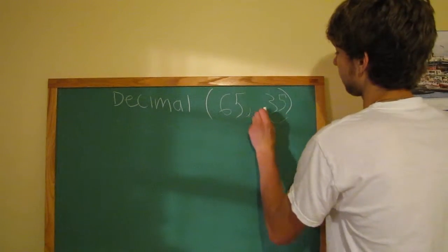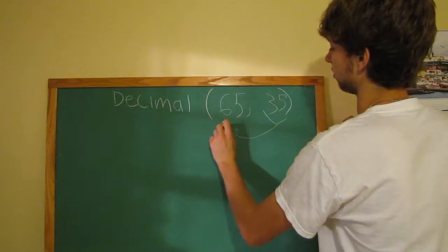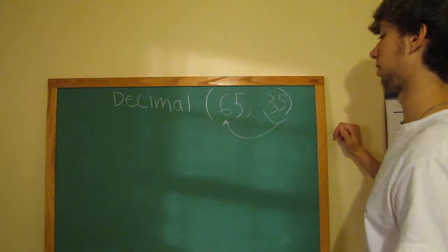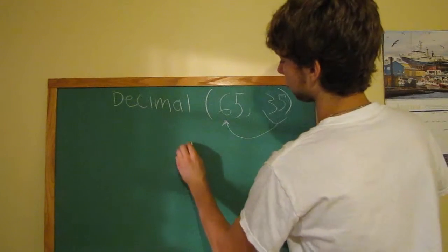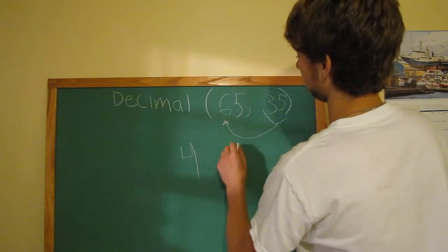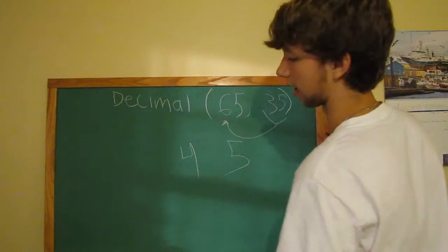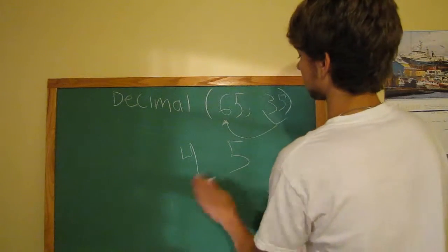And another thing, this number right here can never be larger than this number, because that'd be saying, okay, you can have 4 digits total, but you're having 5 after the decimal. So, basically, that's impossible.